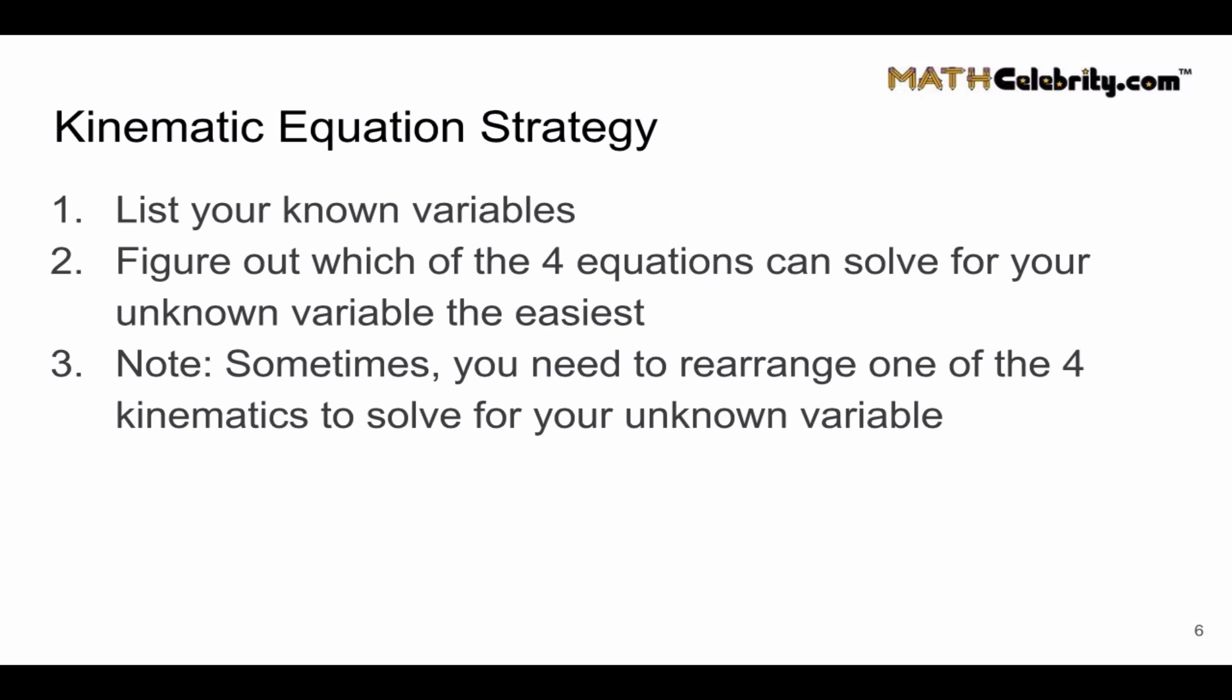Step two, figure out which of the four equations can solve for your unknown variable the easiest. What's going to happen is you'll usually get three variables. You need to figure out what is missing and then the best kinematic equation to pick to solve for that unknown variable.